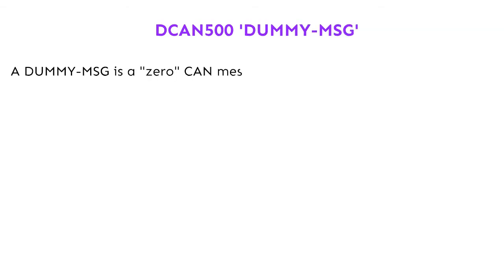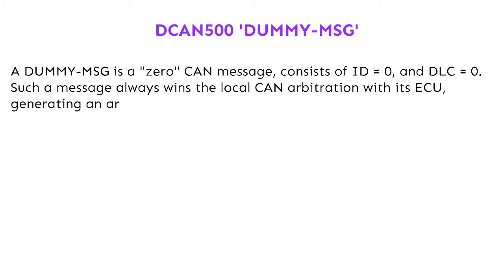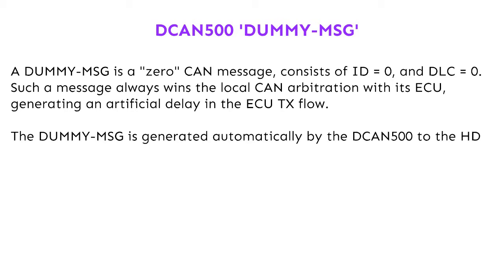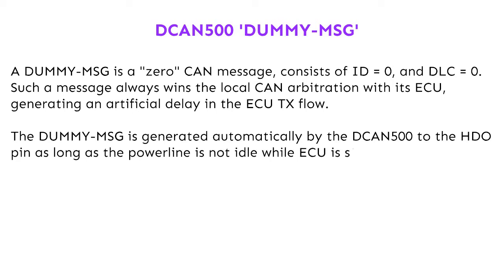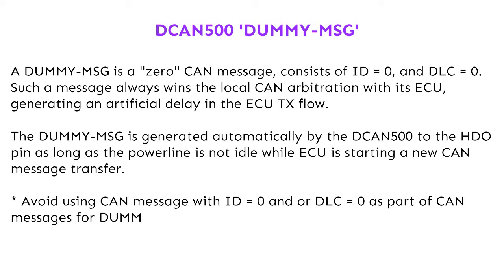A dummy message is a zero CAN message consisting of ID 0 and DLC 0. Such a message always wins the local CAN arbitration with its ECU, generating an artificial delay in the ECU TX flow. The dummy message is generated automatically by the DCAN 500 to the HDO pin as long as the powerline is not idle while the ECU is starting a new CAN message transfer. Avoid using CAN messages with ID 0 and/or DLC 0 as part of CAN messages for proper dummy message operation.